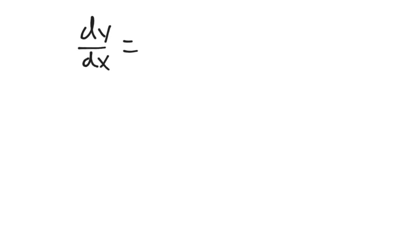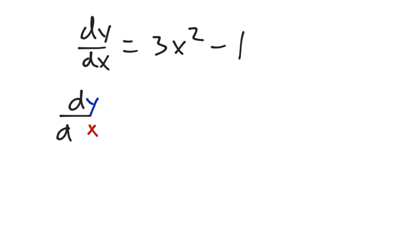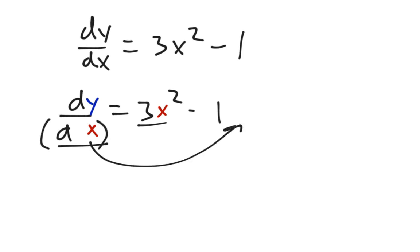Step 1: Separate. I have dy/dx equals 3x squared minus 1. Let's rewrite that using some color so we can see where the variables are. That's an x, and that's an x. The variables are not separated because x and y are next to each other, and that's not good. So I need to move the dx over — I'm going to do that using multiplication.